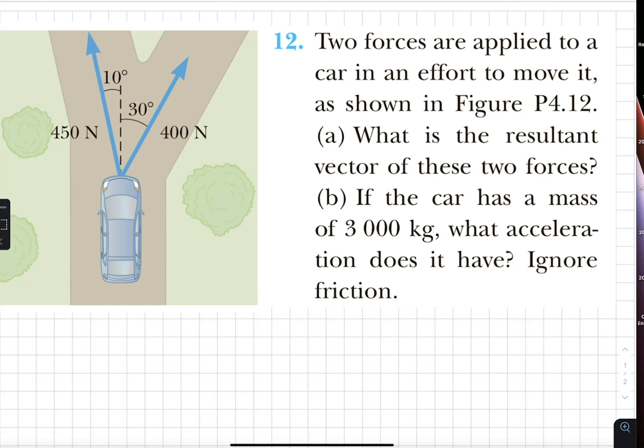They are at an angle to each other, and that angle is not even 90 degrees. We cannot just go and do Pythagorean theorem straight away. If I had 400 this way and 450 this way, then we would have done Pythagorean theorem straight away. This would have been the root of 400 squared plus 450 squared, and then we would have done tan inverse to figure out that angle.